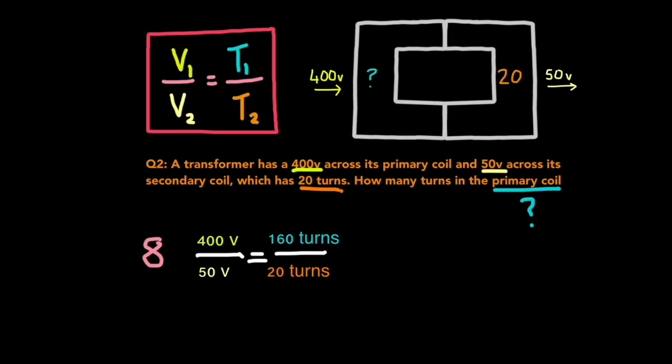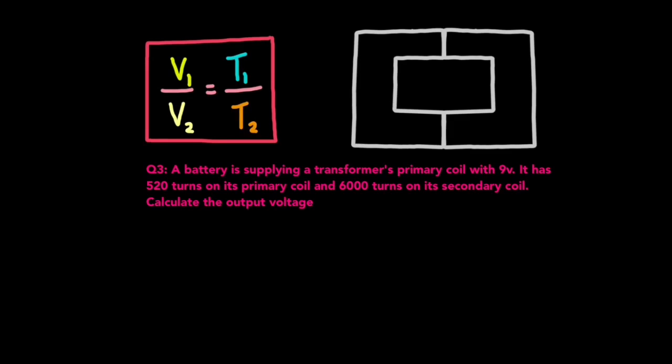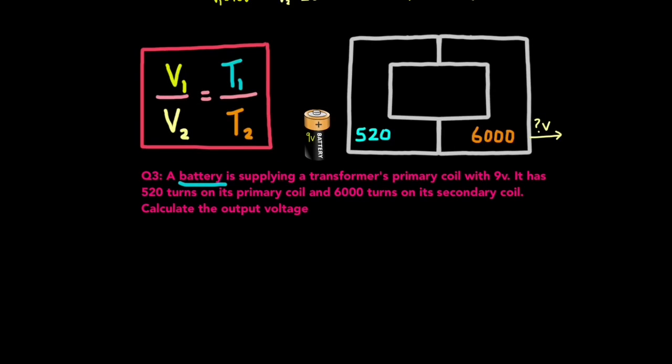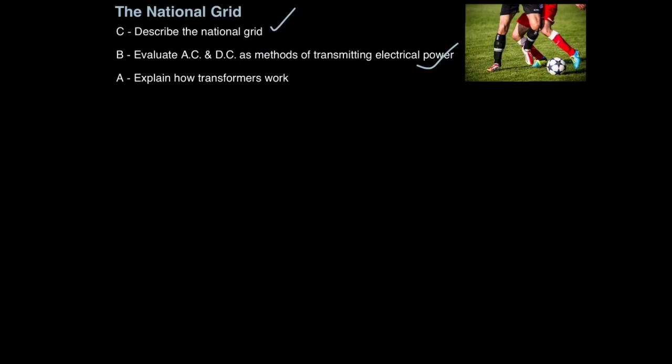Also, you should be able to tell from this that this is a step down transformer, because it has more turns on its primary coil than its secondary coil. So let's look at the final and toughest example. Well, potentially toughest, but actually there's a trick to it. A battery is supplying a transformer's primary coil with 9 volts. It has 520 turns on its primary coil and 6000 turns on its secondary coil. Calculate the output voltage. This is actually a lot easier than it sounds. The only word you need to pay attention to here is battery. You see, a battery, like a solar cell, is a source of direct current. Transformers do not work with a direct current. So the output voltage, no matter what these values say, will always be zero. Look out for this, because they will try and sneak it into exams. But if you remember, you can very smugly put down zero volts. For transformers to work, you must have an alternating current. And that is how transformers work.